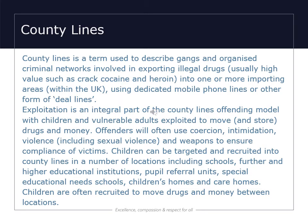County lines is a term used to describe gangs and organised criminal networks involved in exporting illegal drugs — usually high value ones such as crack cocaine and heroin — into one or more importing areas within the UK using dedicated mobile phone lines or other deal lines. Exploitation is an integral part of the county lines offending model, with children and vulnerable adults exploited to move and store drugs and money. Offenders will often use coercion, intimidation, violence including sexual violence, and weapons to ensure compliance of victims. Children can be targeted and recruited in county lines in a number of locations including schools, further and higher institutions, pupil referral units, special educational needs schools, children's homes and care homes.